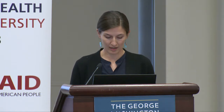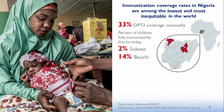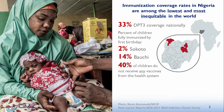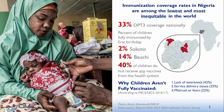There are wide variations in RI system performance across Nigeria's states. Generally, there's higher performance in the southeast and southwest, and lower RI performance in the northeast and northwest. The two northern states highlighted here — Sokoto and Bauchi — have very low percentages of children fully immunized by their first birthday: only 2% in Sokoto and 14% in Bauchi. Over 40% nationally do not receive any vaccines from the health system. Reasons include lack of awareness, service delivery issues, mistrust or fears of vaccination, and family constraints.